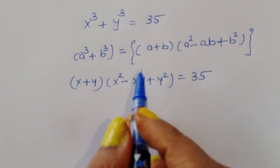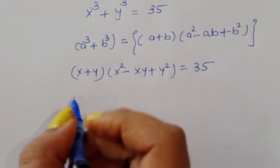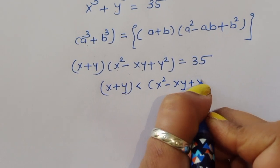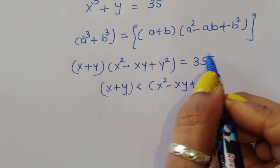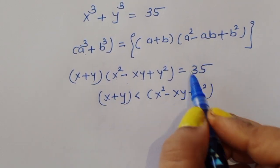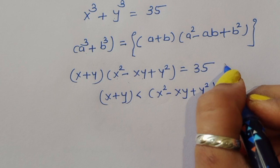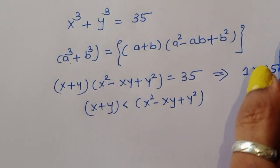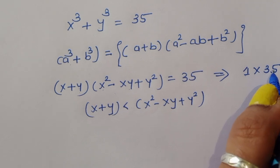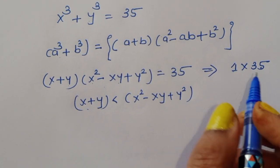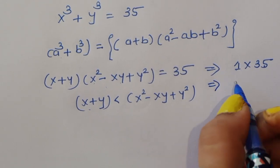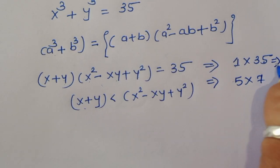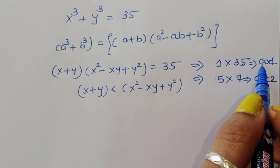We know that x + y is less than x² − xy + y². So we factor 35. The factors of 35 are 1 × 35 and 5 × 7. In each case the smaller factor corresponds to (x + y). We consider Case 1 and Case 2.